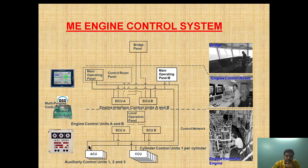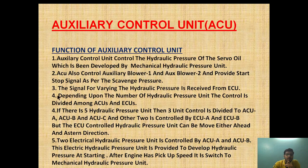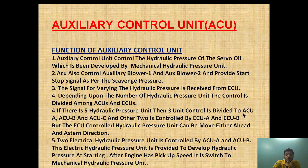If the speed is very slow ahead, the ECU will send a signal to the blower to cut in. When the speed is more than half — like full ahead — it will send a signal depending upon the scavenge pressure to cut off the blower. The signal for varying hydraulic pressure is received from the ECU. Depending upon the number of hydraulic pressure units, control is divided between ECU and ACU. Suppose there are five hydraulic pressure units: three units are given to ECU A, B, and C, and the other two are controlled by ECU A and B.